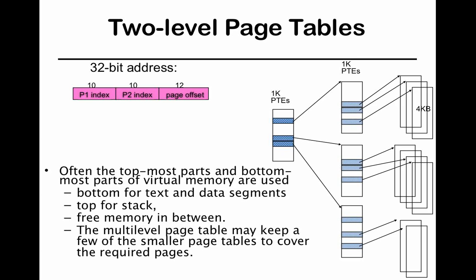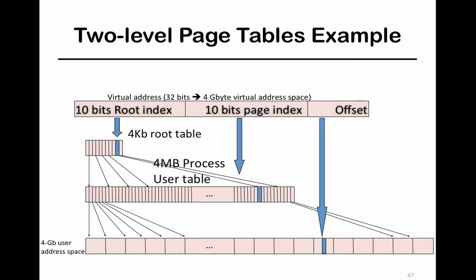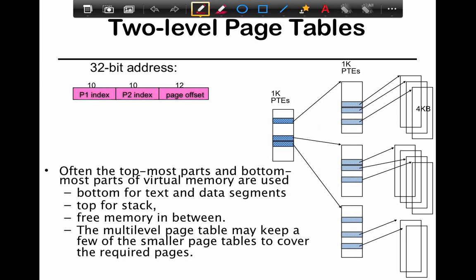In this segment we're going to look at the data structures used to organize page tables. Throughout this talk we'll be using 32-bit address space, just because it's easier to describe on a single page. The first data structure we're going to look at, which is widely used across most operating systems, is a trie data structure, which is a variant of a conventional tree. What you have is a hierarchical organization not unlike a B-tree, where you have top-level root page tables.